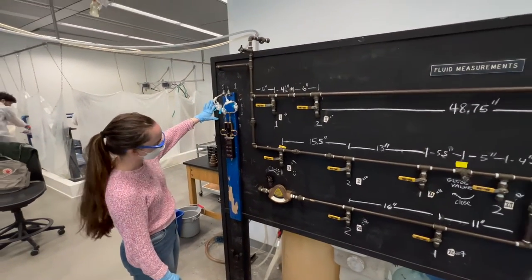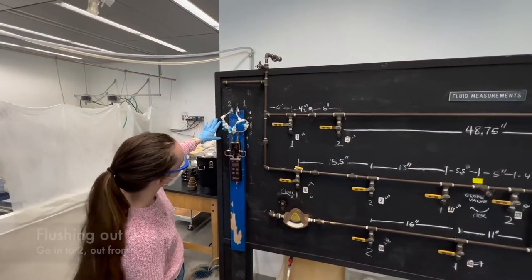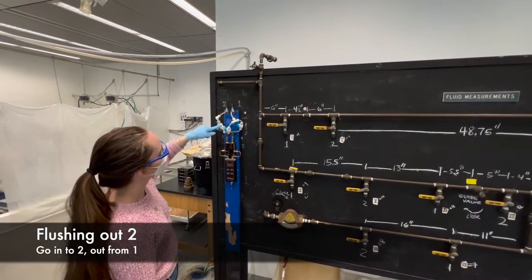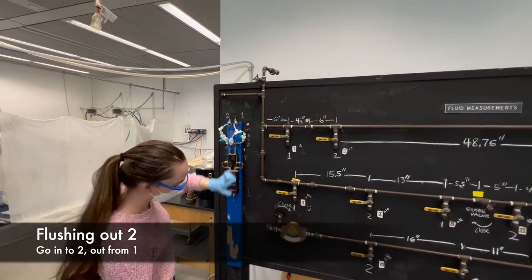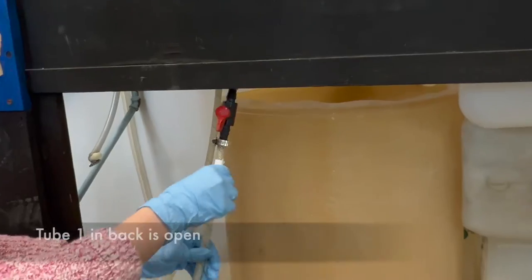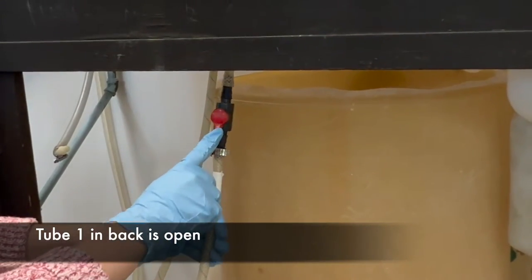Right now we will flush out, we'll go in from two and flush out to one. So we want to make sure one is open, the tube labeled one, which it is because it's parallel.